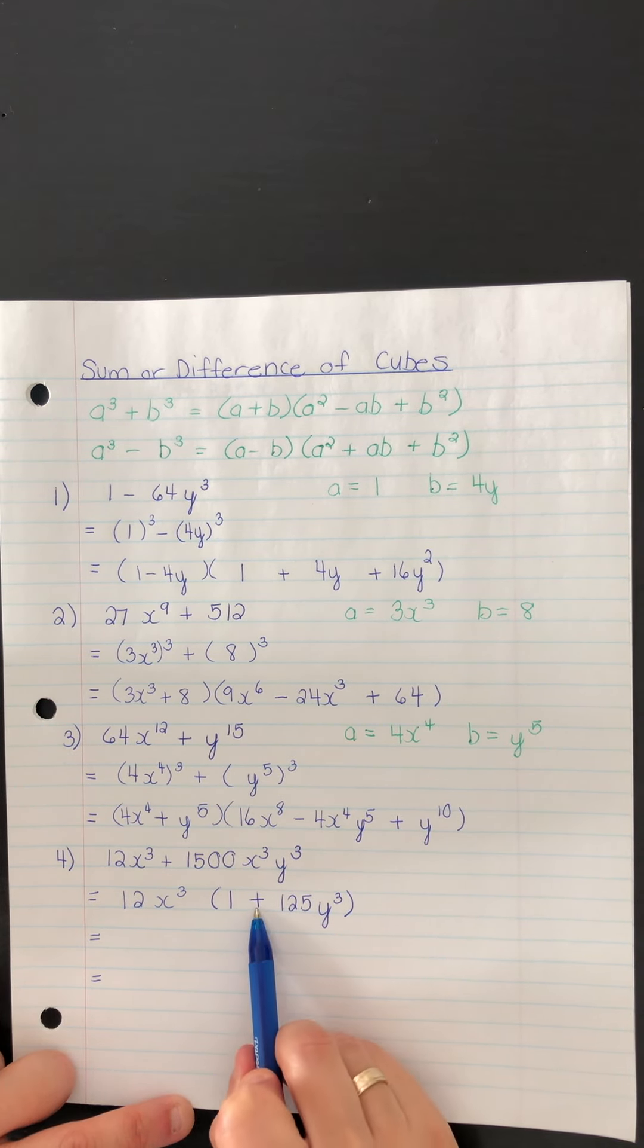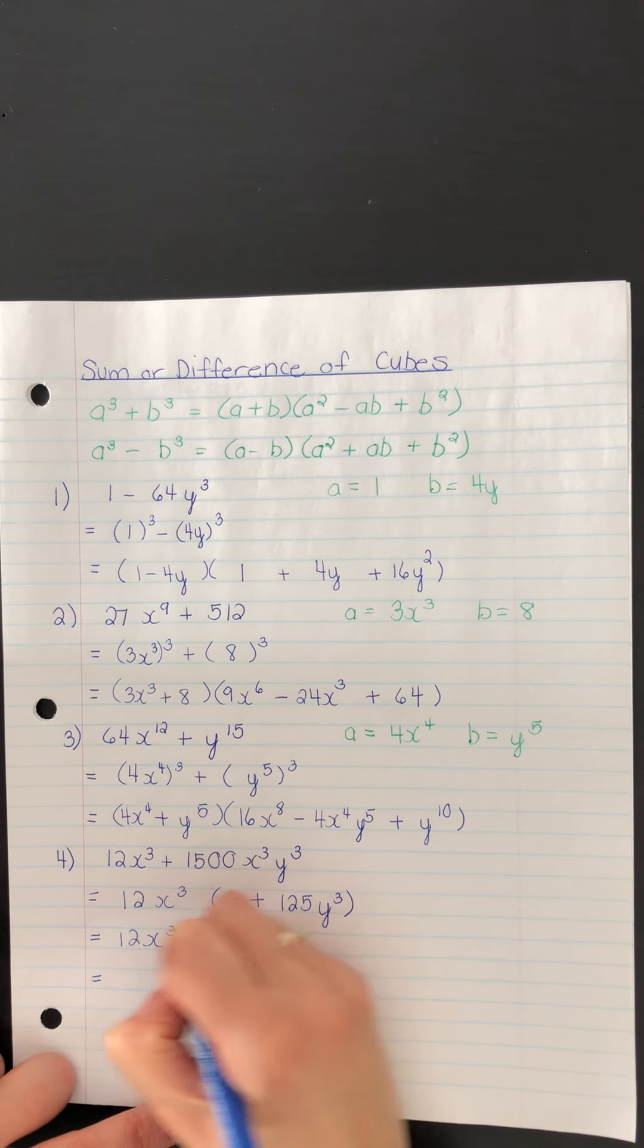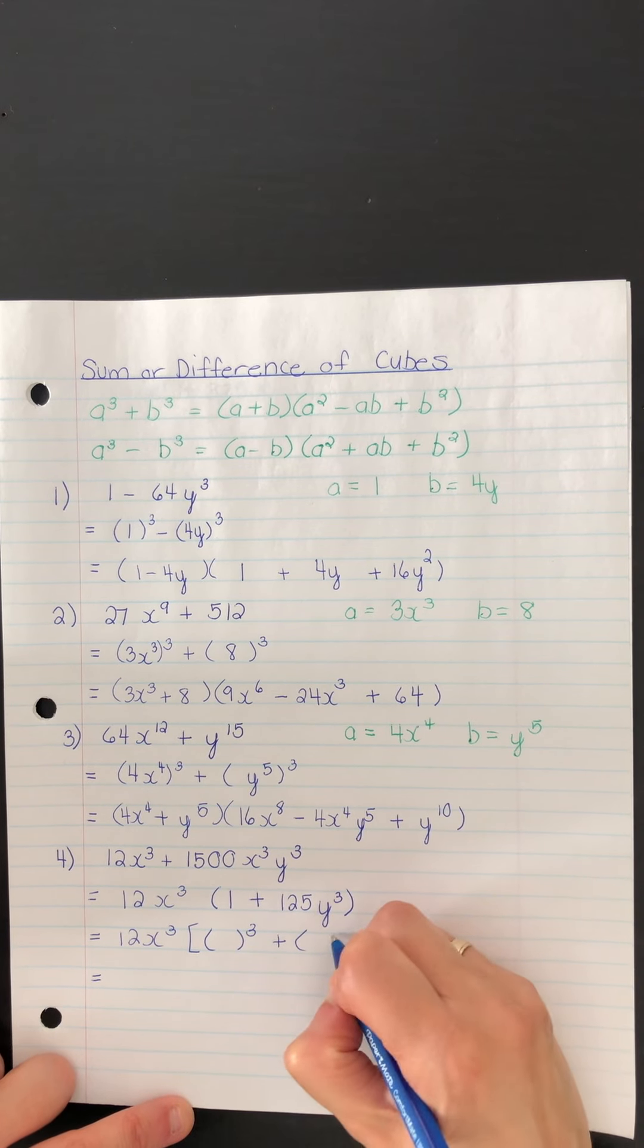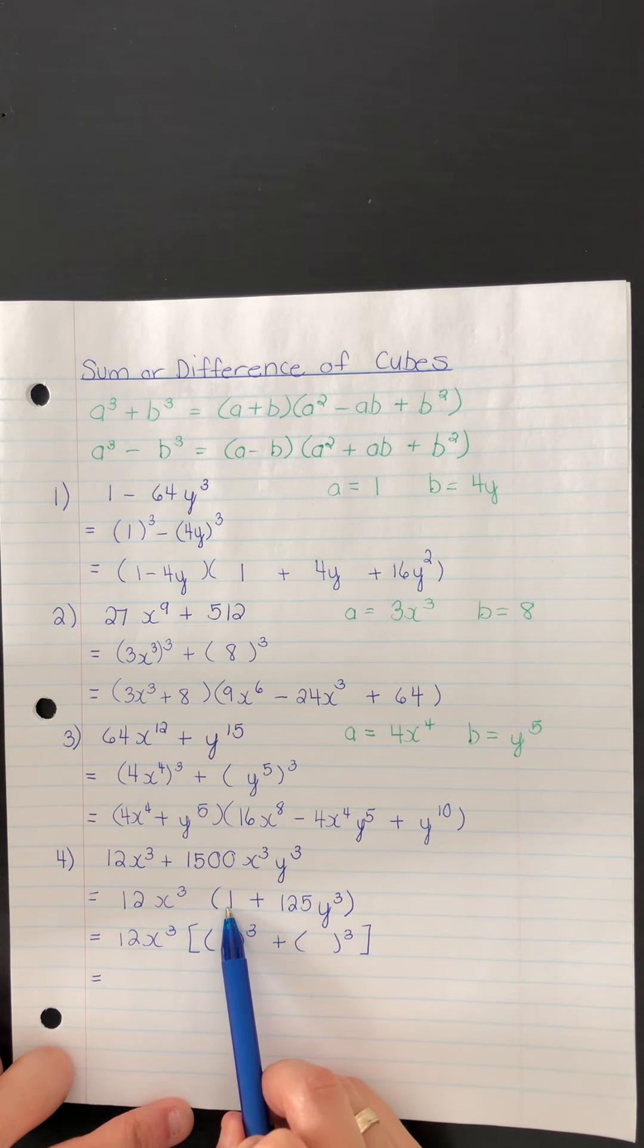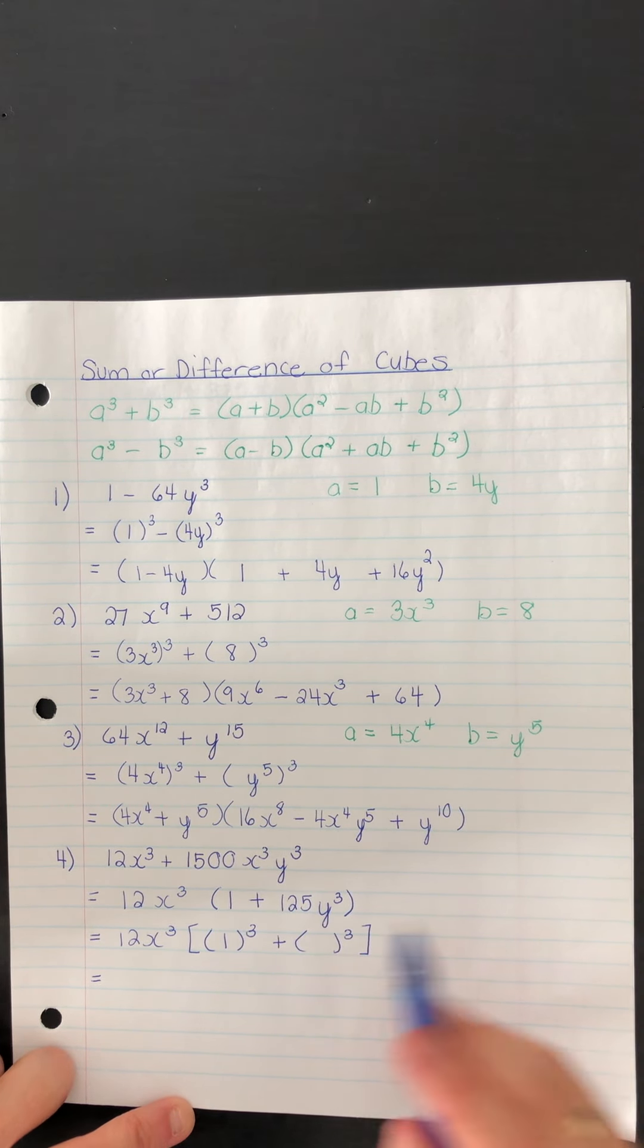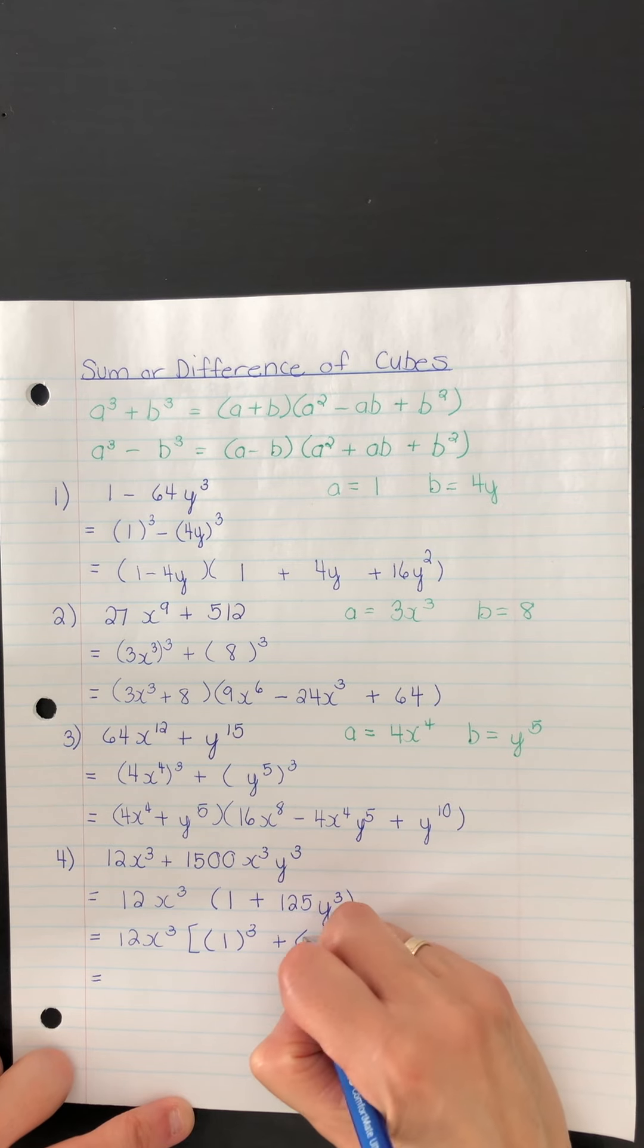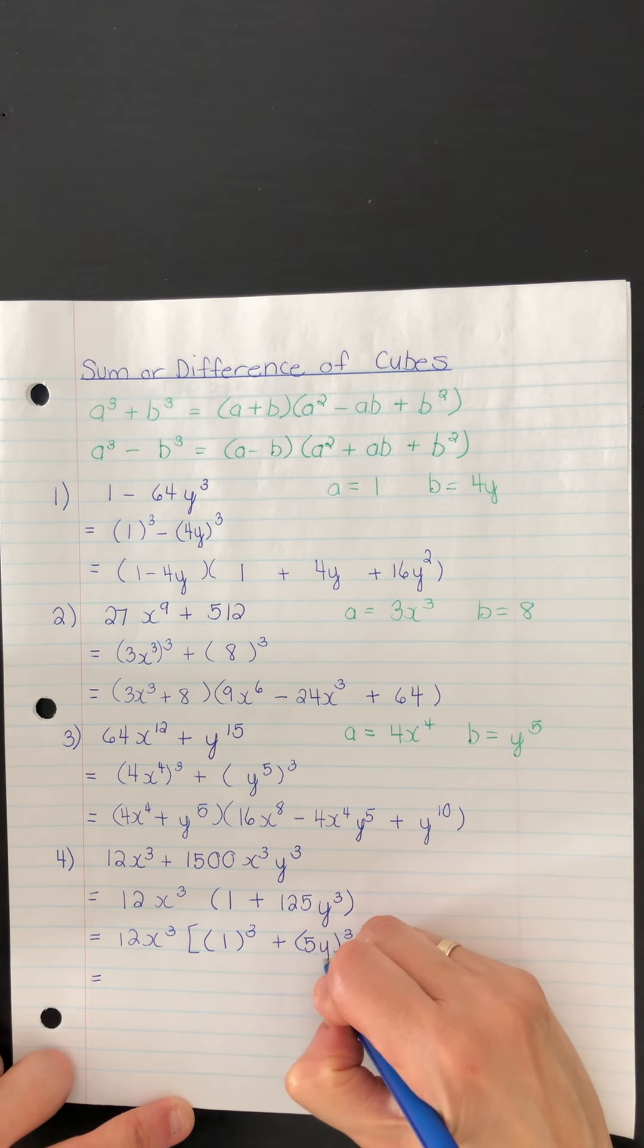So we have the sum of two perfect cubes now. And to confirm that, it's nice to start with this setup. So here we have 1. The cube root of 1 is 1. Here we have 125y cubed. So what should be in the brackets? Well, the cube root of 125 is 5. The cube root of y cubed is y.